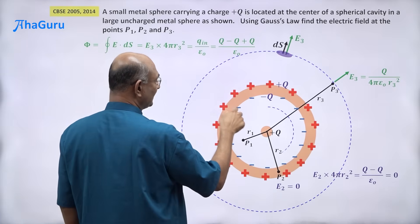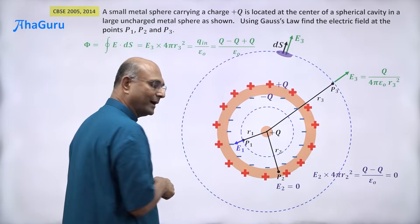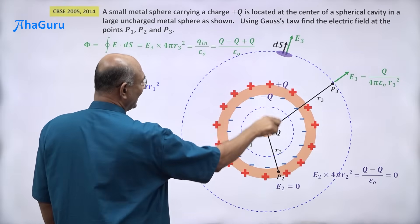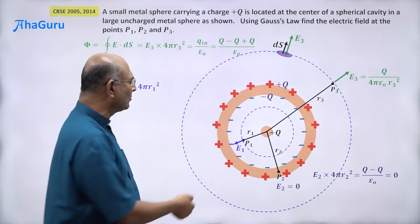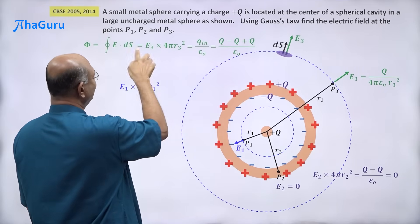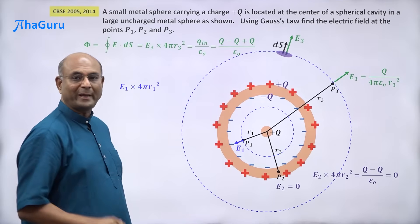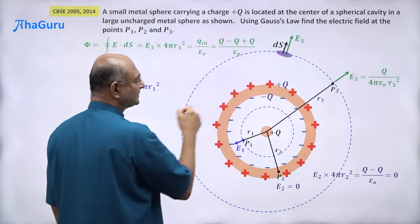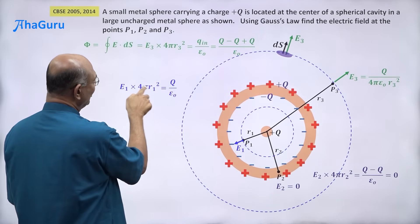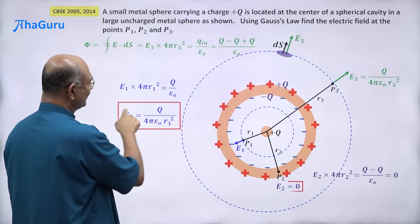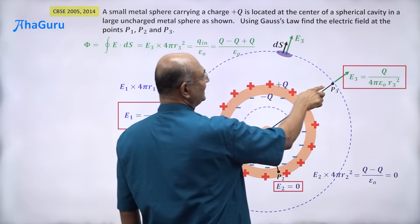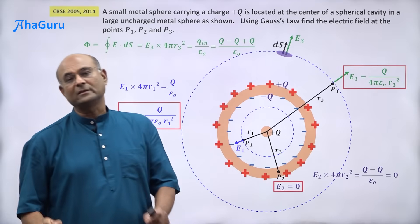For P1, inside the cavity, I draw another Gaussian surface of radius r1. The electric field E1 is radially outward, ds is radially outward, so by the same reasoning: E1 times 4πr₁² equals the enclosed charge over epsilon naught. The only charge enclosed is the plus q on the small sphere, so E1 = q / (4πε₀r₁²). Summary: E1 = q/(4πε₀r₁²), E2 = 0, and E3 = q/(4πε₀r₃²).